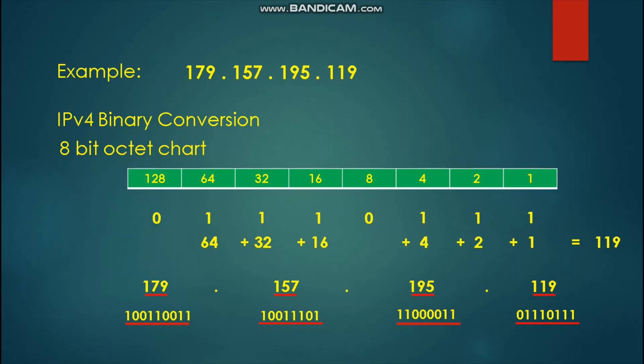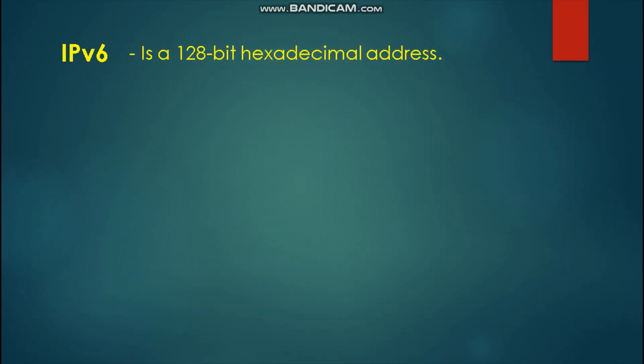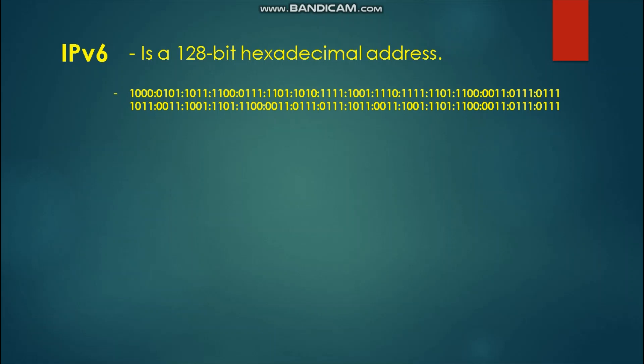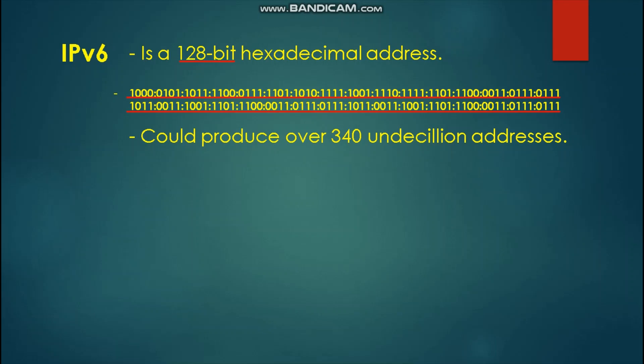We are now able to learn how to convert decimal numbers into binary form. Let us proceed with IPv6. IPv6 is a 128-bit hexadecimal address. This represents 128 bits total — a huge number of binary bits. If you count all these binary bits, it will give you 128. IPv6 can produce over 340 undecillion addresses.